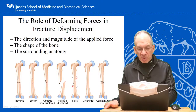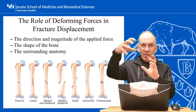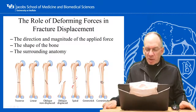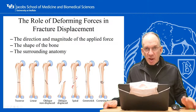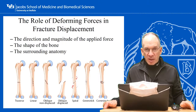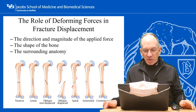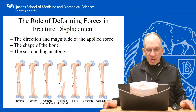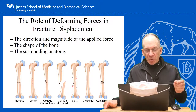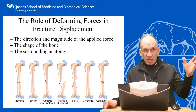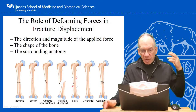Oblique fractures mean the force was applied at an oblique angle, and spiral fractures have a twisting mechanism. That's really important in different populations. If you see a non-ambulatory infant with a spiral fracture, that's child abuse until proven otherwise — there's no way a non-ambulator can generate enough force for a twisting fracture of their femur. If you see a spiral fracture in a non-ambulator, you have to contact Child Protective Services. It doesn't mean it's always abuse, but you have to be thinking about it.